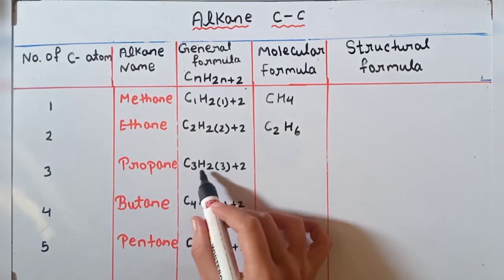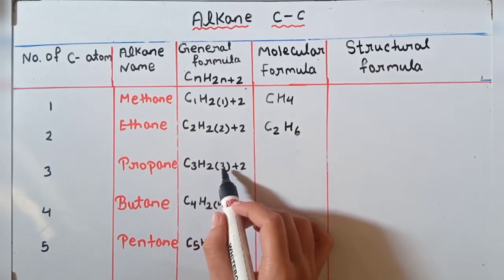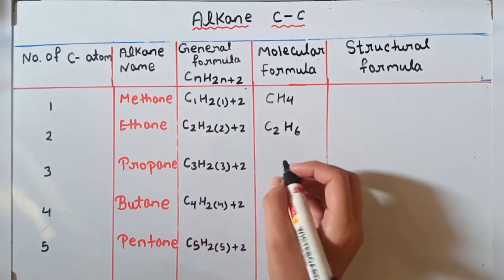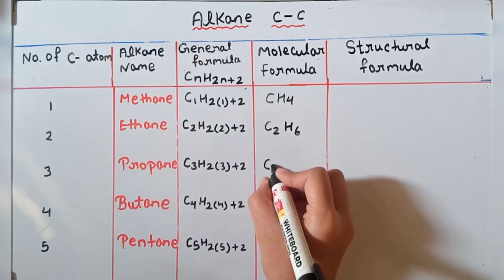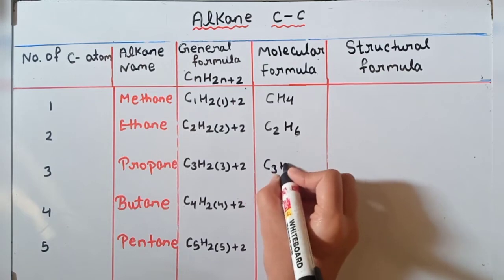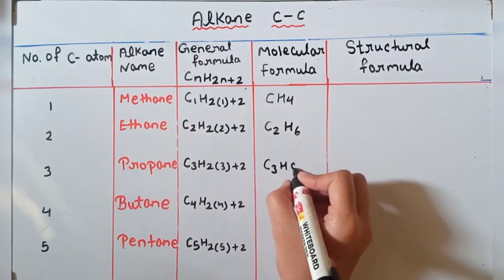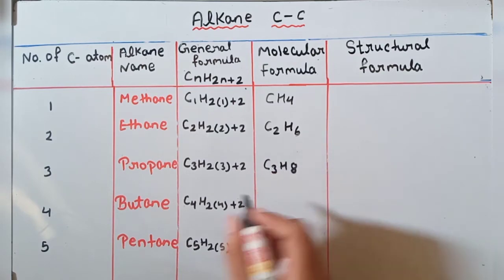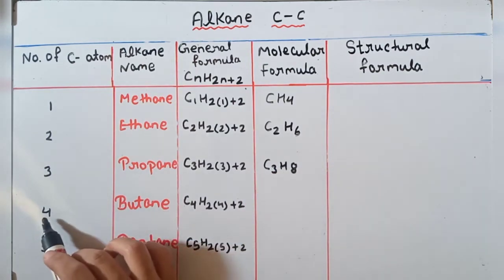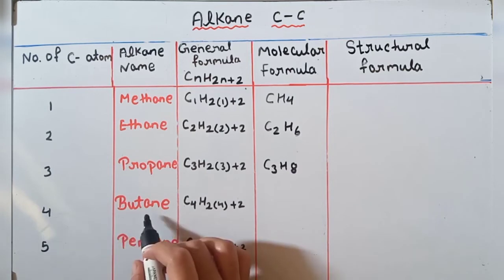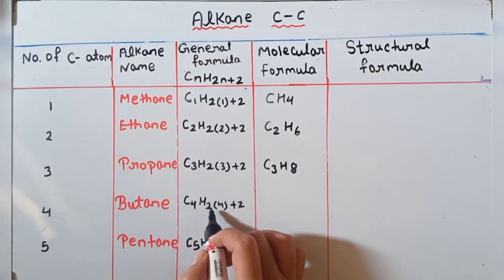For propane, number of carbon 3 rahenge. General formula C3H(2×3+2), so molecular formula kya ban jayega — C3H8. Waise hi butane mein kitne carbon hote hain — 4. Carbon ke liye butane hota hai, to general formula rahega C4H(2×4+2).